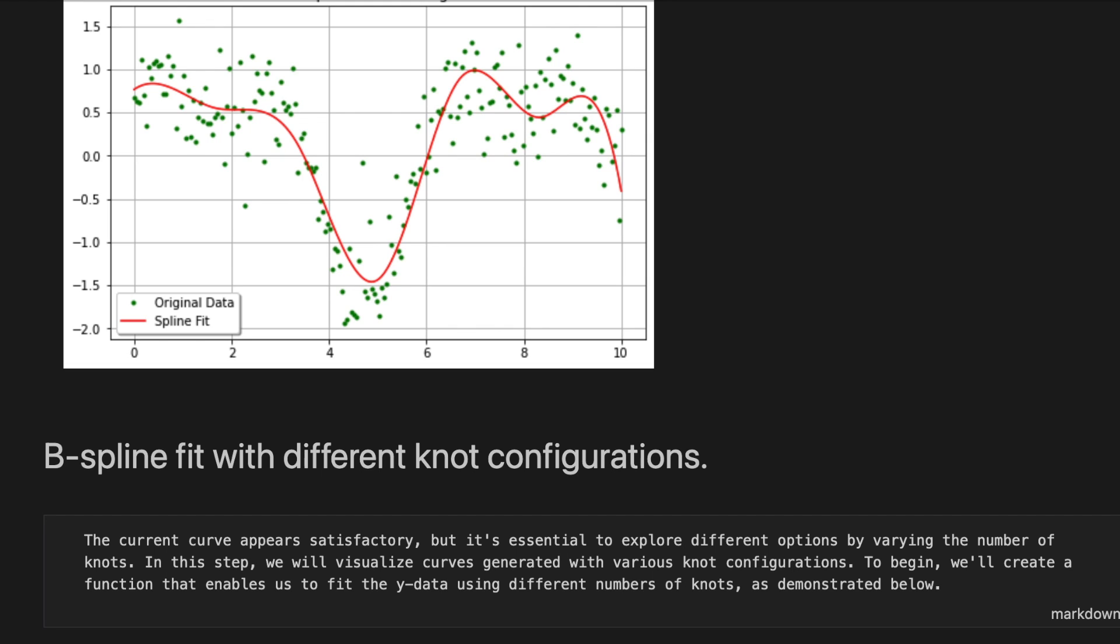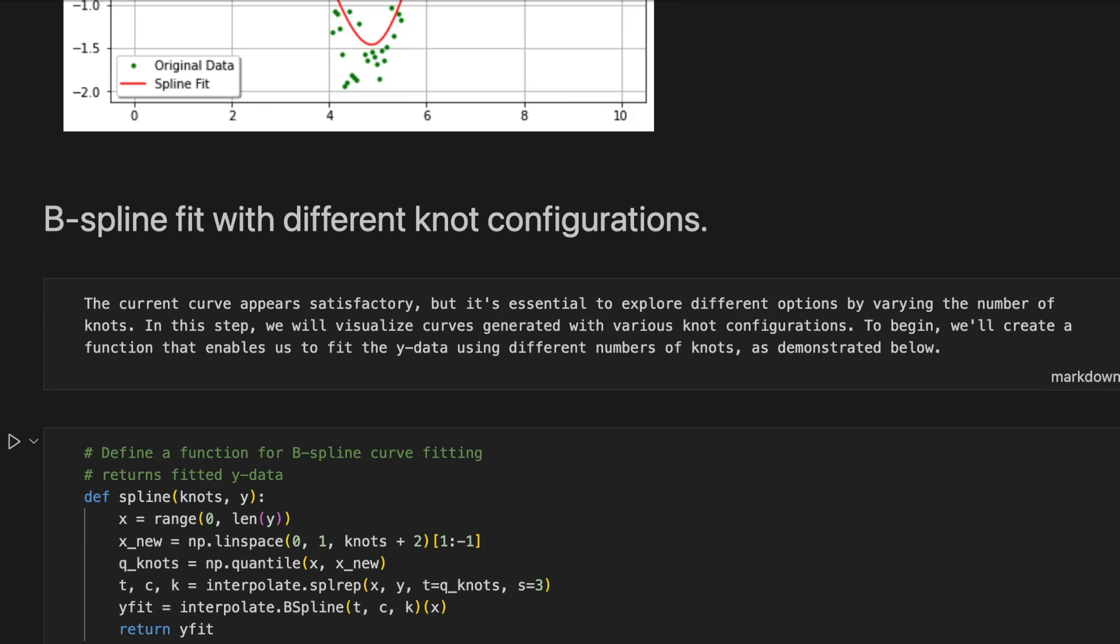Next is a b-spline fit with different node configurations. The current curve appears satisfactory, but it is essential to explore different options by varying the number of nodes. In this step, we'll visualize the curves generated with various node configurations. To begin, we'll create a function that enables us to fit the y data using different number of nodes as demonstrated below.